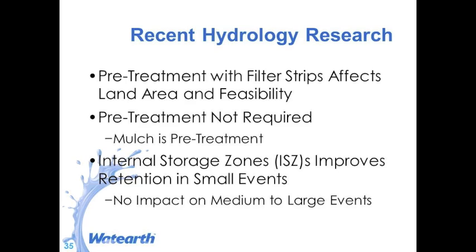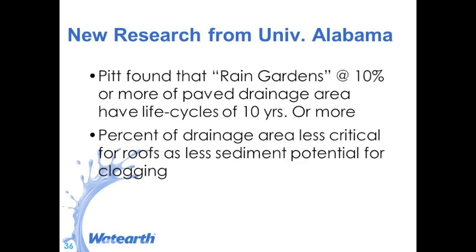Internal storage zones — basically an elevated underdrain that forces ponding within the drain rock layer — can help with nitrate removal and also improve hydrologic performance. Bob Pitt at the University of Alabama found that rain gardens that were 10% or more of the paved drainage area have life cycles of 10 years or more. Those with less than 10% of the area tended to have lower life cycles because of the sediment load. For rain gardens serving roofs or landscape areas, that was less critical since there's less sediment and potential for clogging.